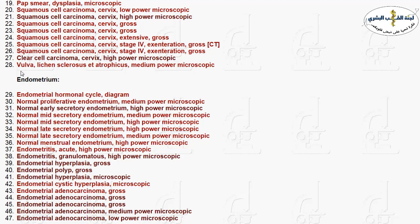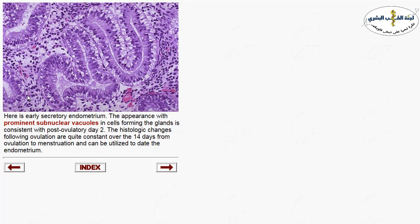Regarding the endometrium, the uterus is lined by endometrial glands. In between we have endometrial stroma, then the myometrium which is smooth muscle. The endometrial glands are affected by hormones during the menstrual cycle, which has three phases: proliferative phase, secretory phase, and shedding endometrium.